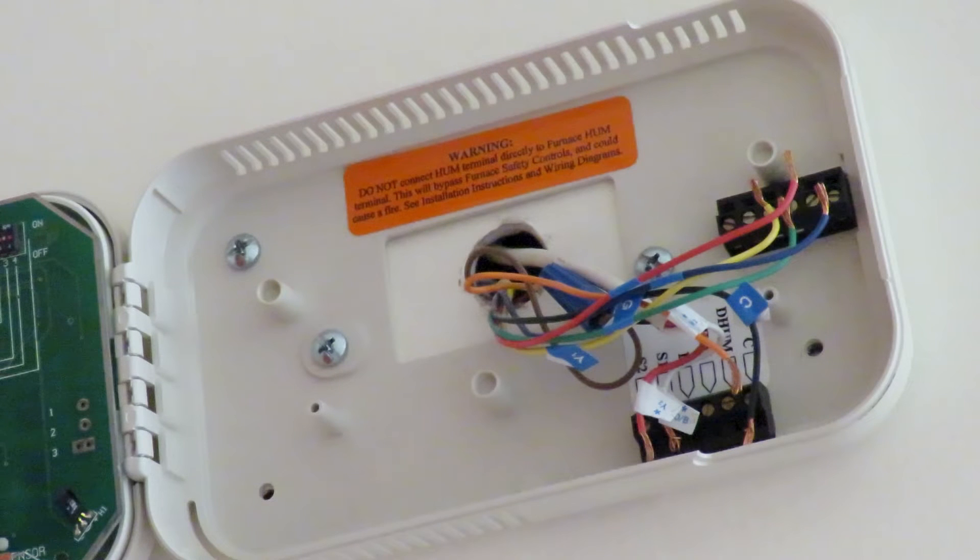So now I have to tag all my wires before I disconnect them, which I've done. I put the R tag on the red wire, the Y1 tag on the yellow wire, the G tag on the green wire, the C tag on the black wire, the W2 star tag on the orange wire, and the W1 star tag goes to the blue wire.